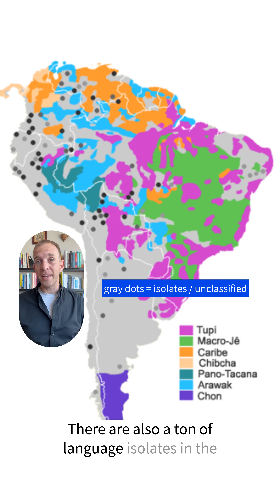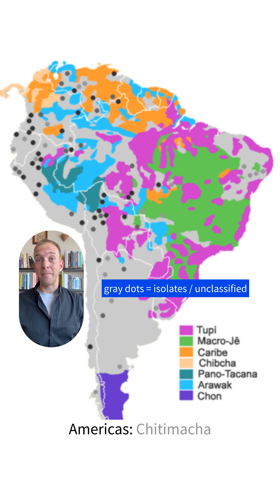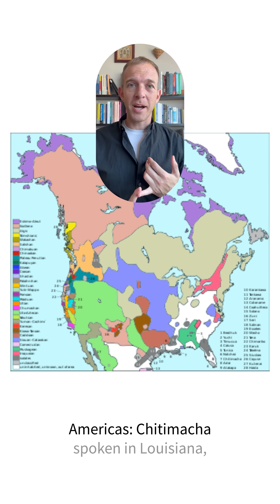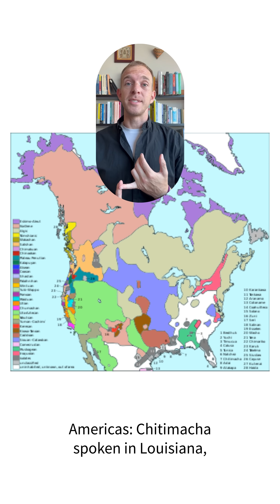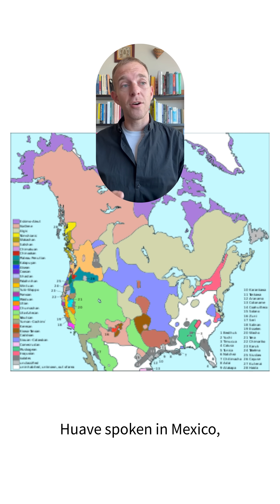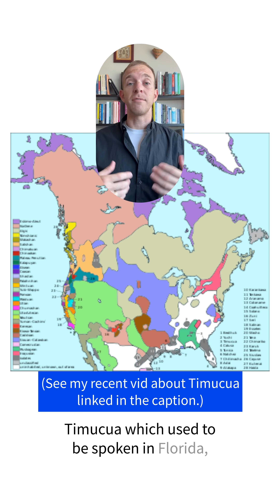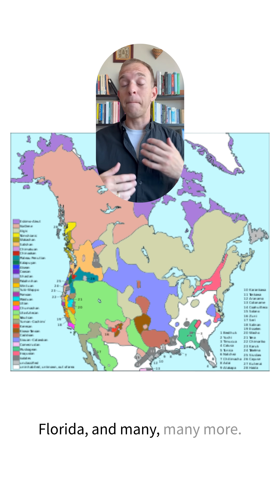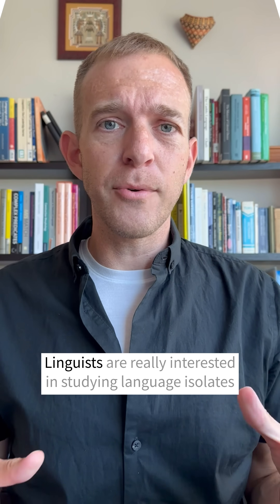There are also a ton of language isolates in the Americas: Chitimacha, spoken in Louisiana; Juave, spoken in Mexico; Temuqua, which used to be spoken in Florida — and many, many more.